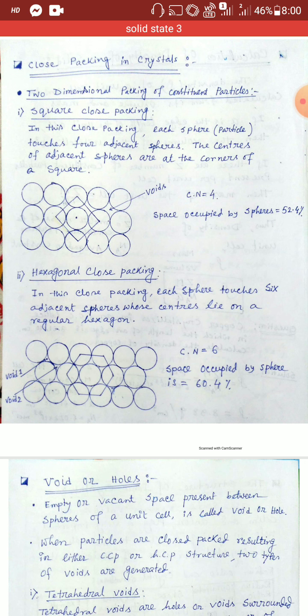In hexagonal close packing, each sphere touches six adjacent spheres whose centers lie on a regular hexagon — as shown in the drawing. The coordination number in this case is six, because each sphere is attached to six adjacent spheres. The space occupied by the spheres in hexagonal close packing is 60.4%.